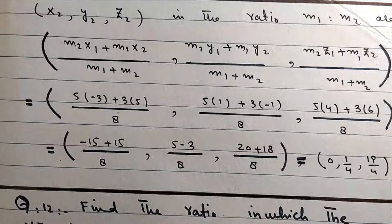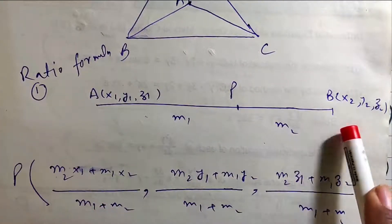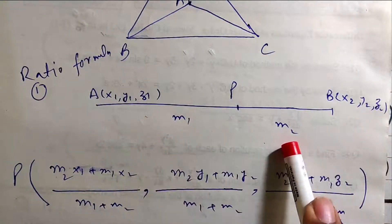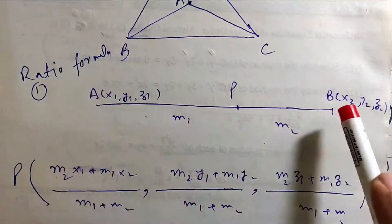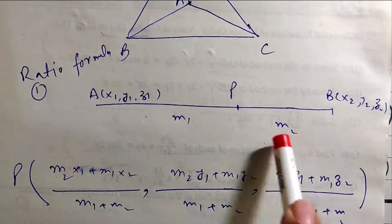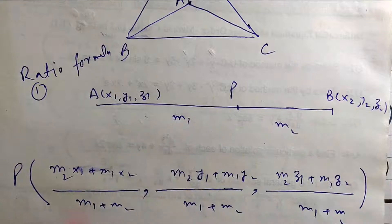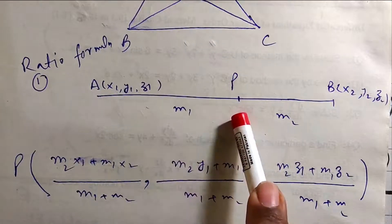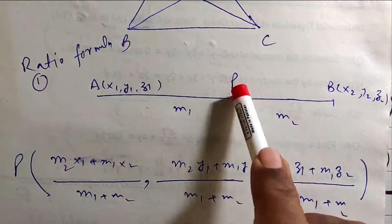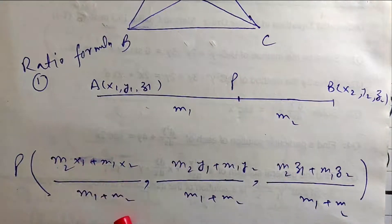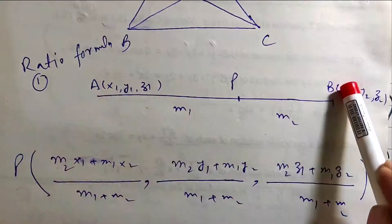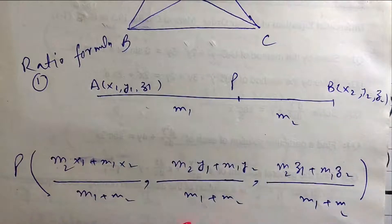When you apply the formula, x1, y1, z1 and x2, y2, z2 are available with M1, M2. Applying: M2·x1 plus M1·x2 over M1 plus M2, M2·y1 plus M1·y2 over M1 plus M2, M2·z1 plus M1·z2 over M1 plus M2.